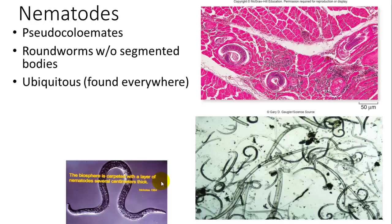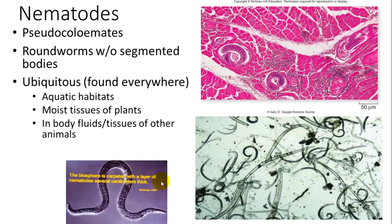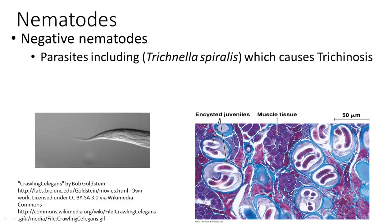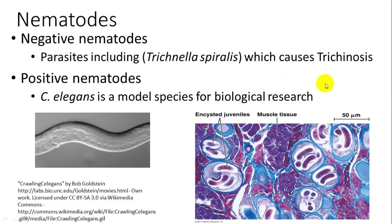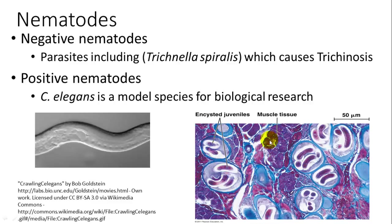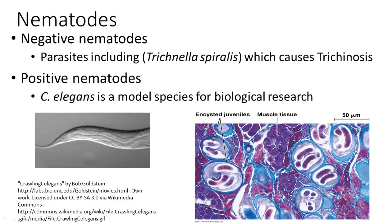Nematodes are roundworms without segmented bodies, found everywhere — some are parasitic in muscle tissue, moist plant tissues, and aquatic habitats. They reproduce sexually. It has been said that if you removed everything from Earth except nematodes, they would form an outer shell outline of the planet. Parasitic species include Trichinella spiralis, which causes trichinosis. A helpful species is C. elegans, a model organism for biological research.